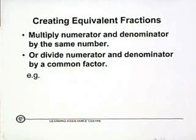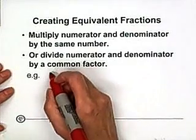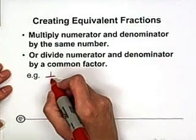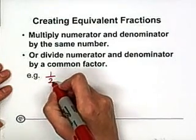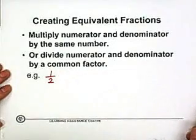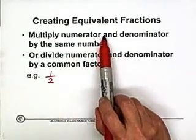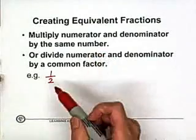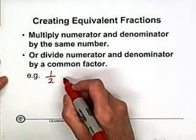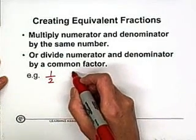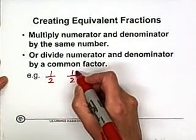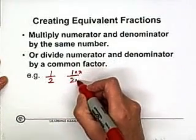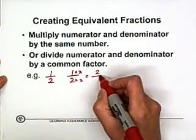So let's see how to create equivalent fractions. We still have the same example: one half, one over two. To create an equivalent fraction, you just multiply the numerator and denominator by the same number. So let's multiply by two — and you get two over four.